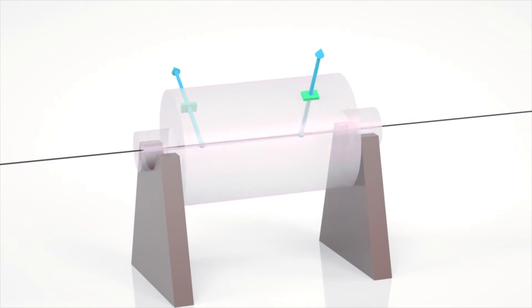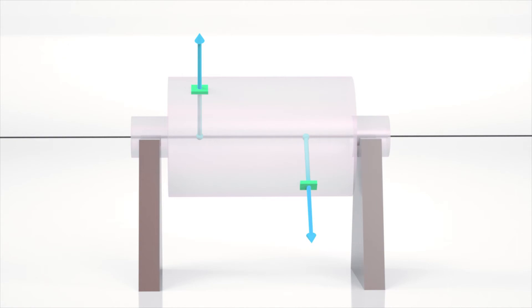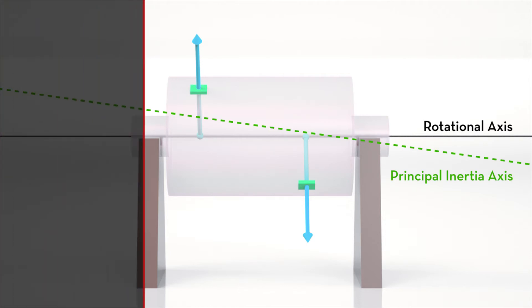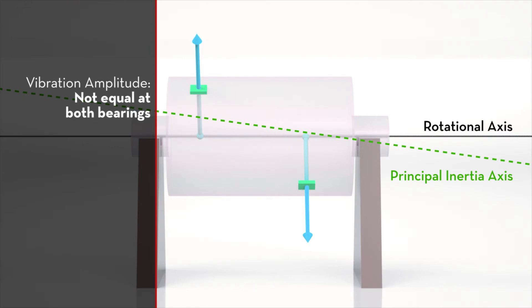Dynamic unbalance is a combination of static and couple unbalance. It occurs when the principal inertia axis is displaced from the rotational axis and does not intersect at the center of gravity. The two axes are not parallel. The vibration amplitude is not equal at both bearings. The phase angles are different.